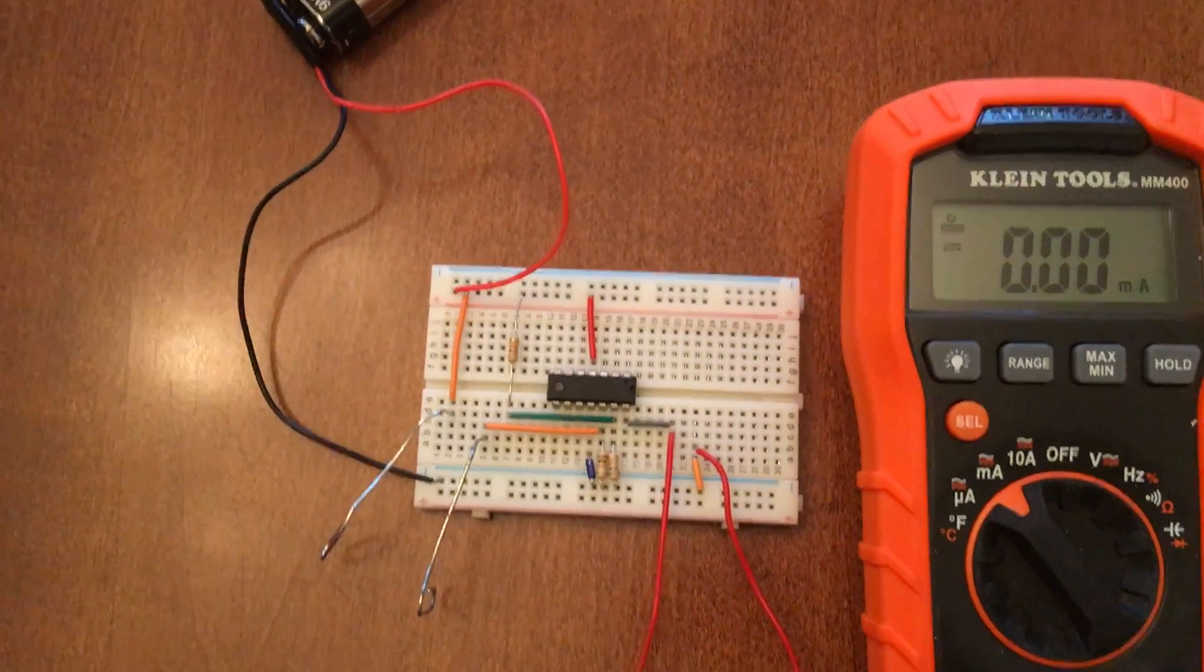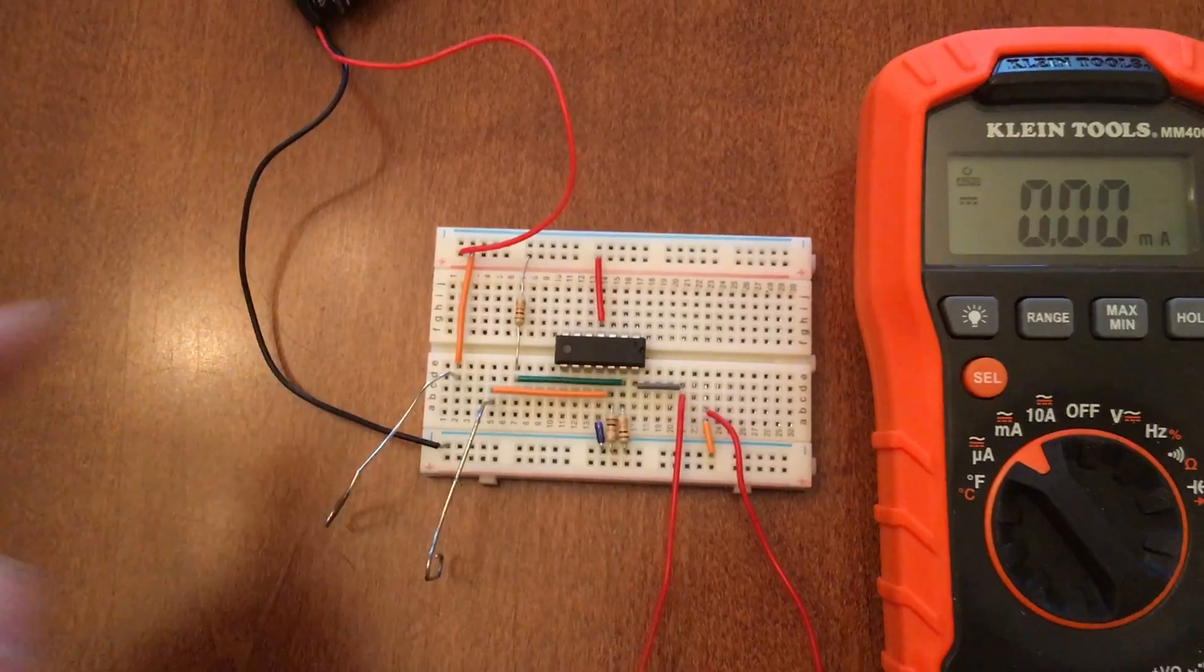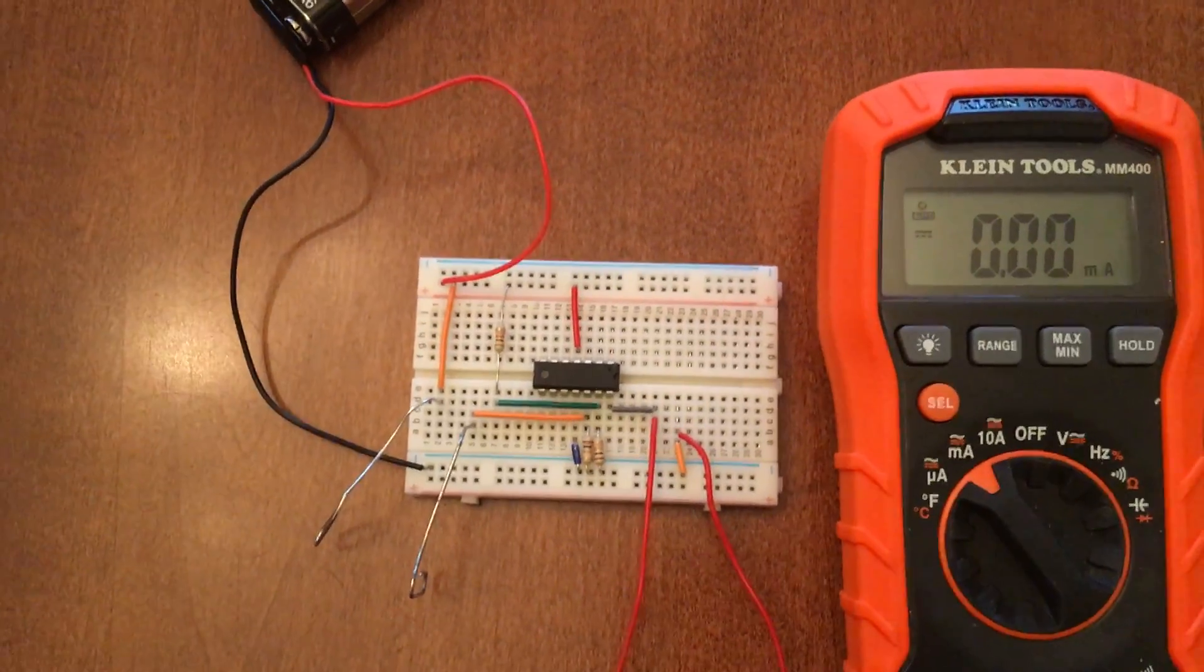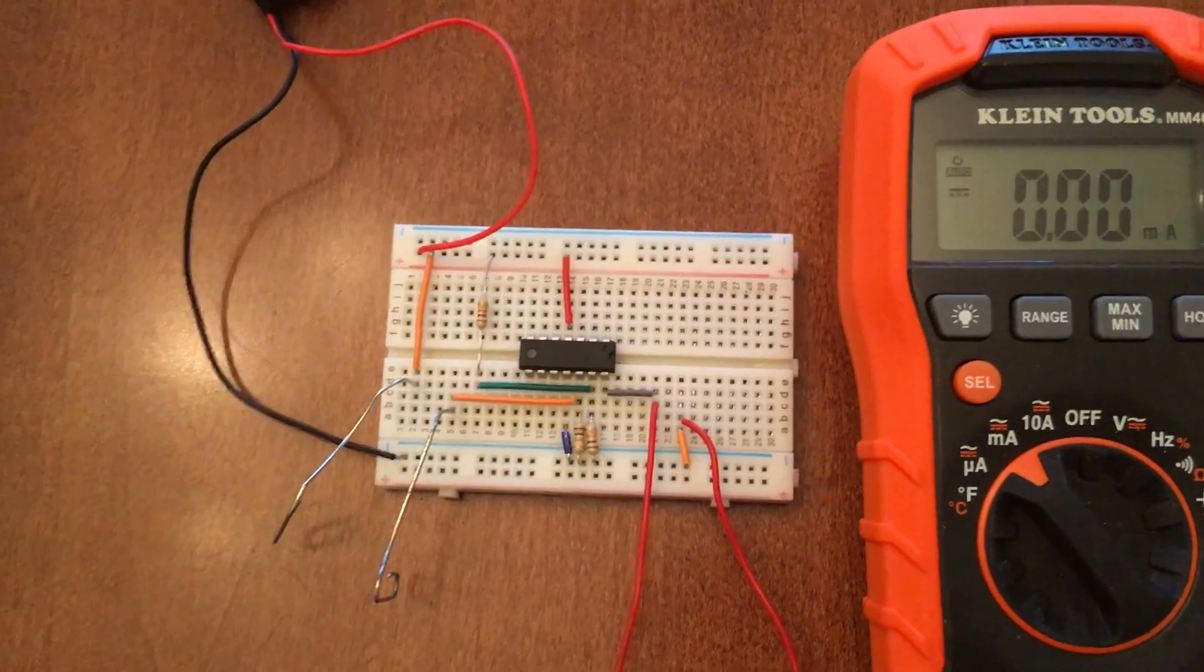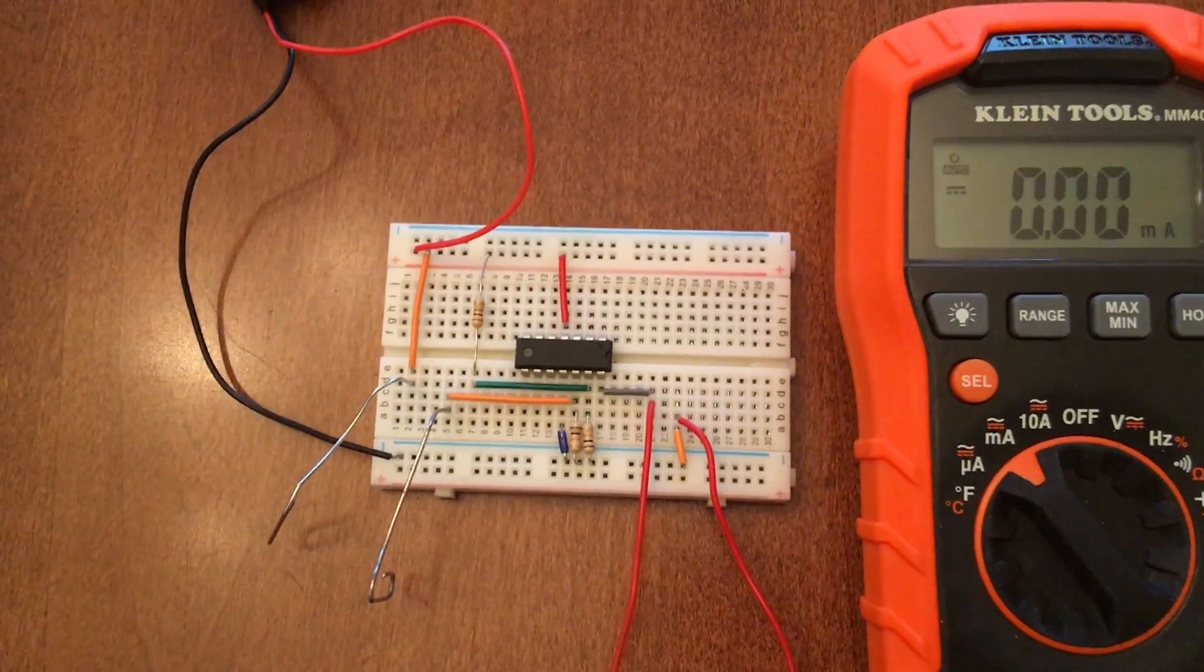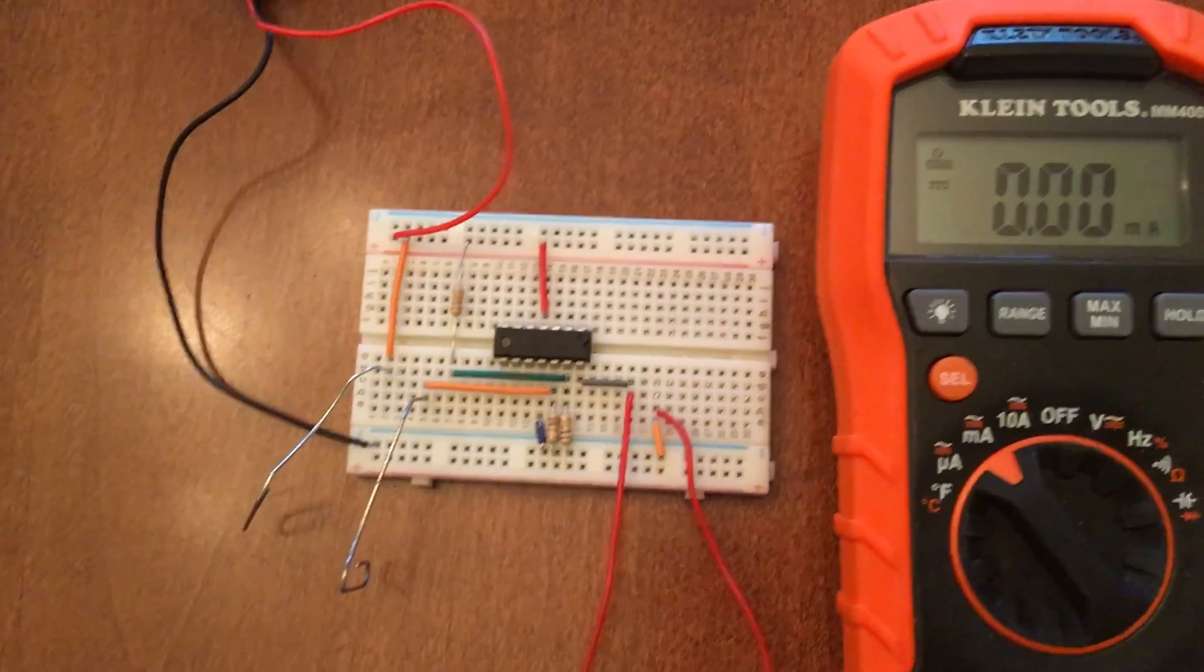We also have a branch that is not connected right now that does not have a resistor, so that would provide the full voltage to the non-inverting input. Both of those inputs are brought down to ground by the 10k resistors down there.